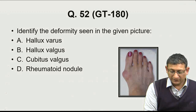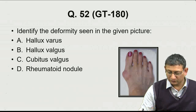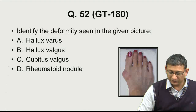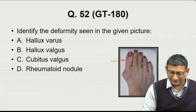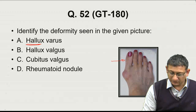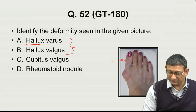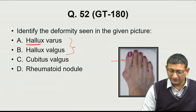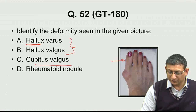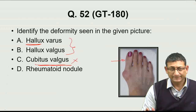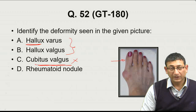Question 52: Identify the deformity seen in the picture. This is a deformity of the great toe — also called hallux. This is going to be either hallux valgus or varus. Cubitus valgus is a deformity of the elbow, and a foot is shown, so it must be hallux valgus or varus.